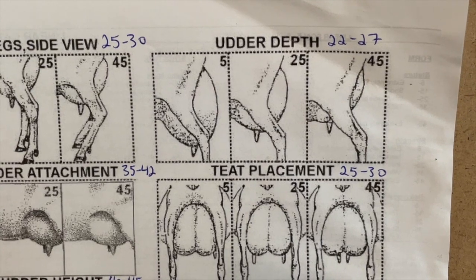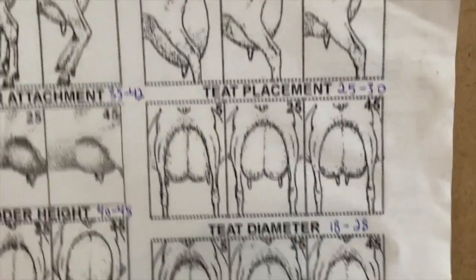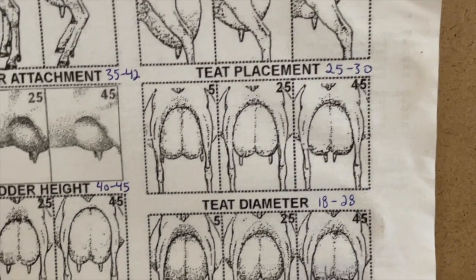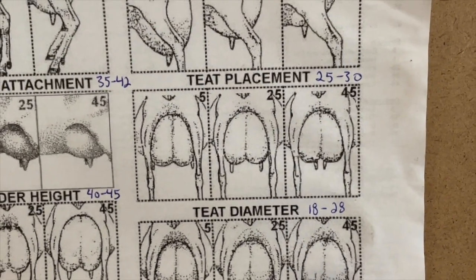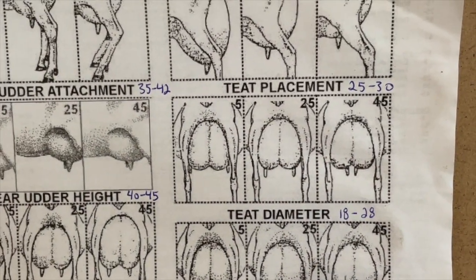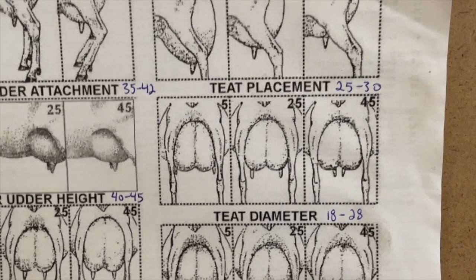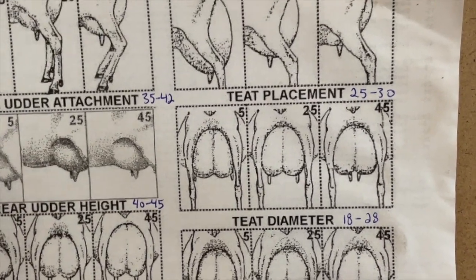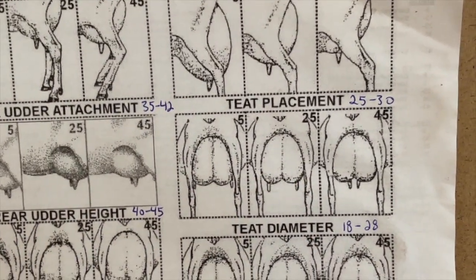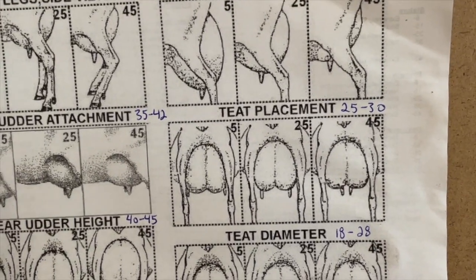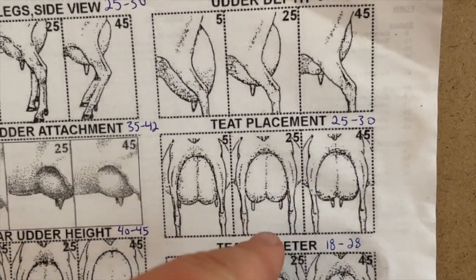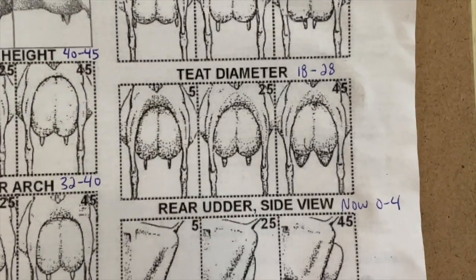For teat placement, I see way too much of teats placed outside on the leg — that's not healthy for the animal and not fun to milk. What we're really looking for is a teat centered right in the middle of each cleft of the udder, which would be a placement score of 25. We consider that perfect teat placement and are looking for a score of about 25 to 30.